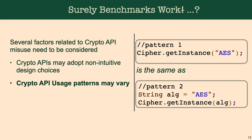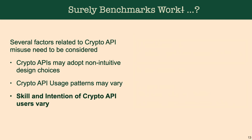Next, cryptographic API usage patterns may vary. As you can see, two different patterns can express the same thing but use different syntax, requiring different types of techniques to analyze and detect. Finally, the skill and intention of the cryptographic API user may vary, and depending on how skilled they are or what their intention is, they can express the same types of cryptographic API misuse in different ways.